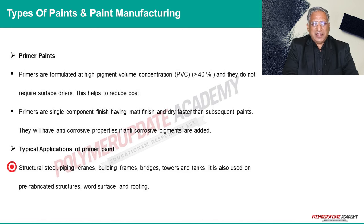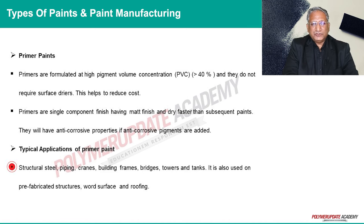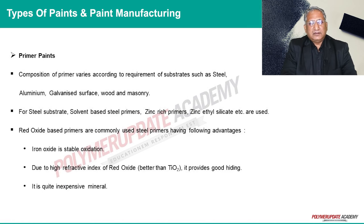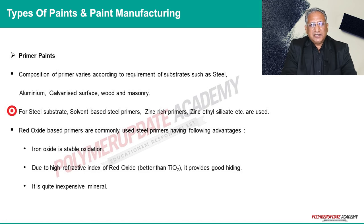Primer paint is applied on structural steel, piping, cranes, building frames, bridges, towers, and tanks. It is also used on prefabricated structures, wood surfaces, and roofing. The composition of primer varies according to the requirement of the substrate, such as steel, aluminium, galvanized surface, wood, and machinery.